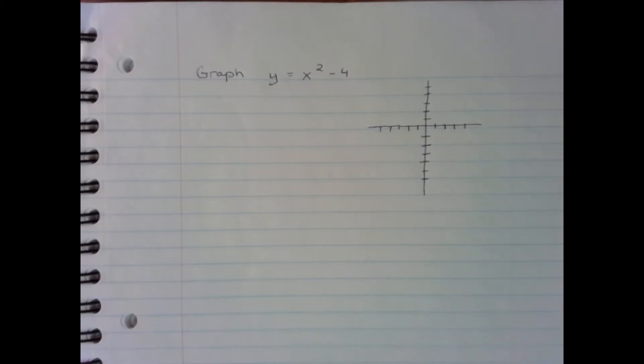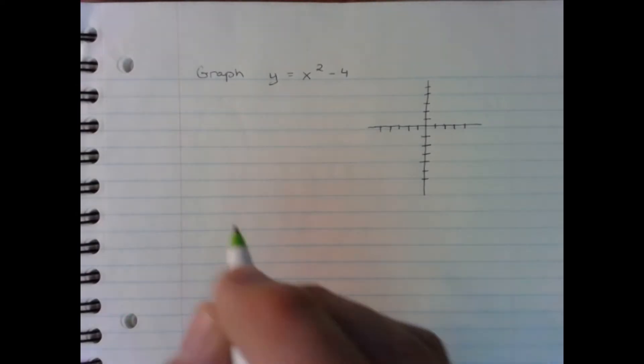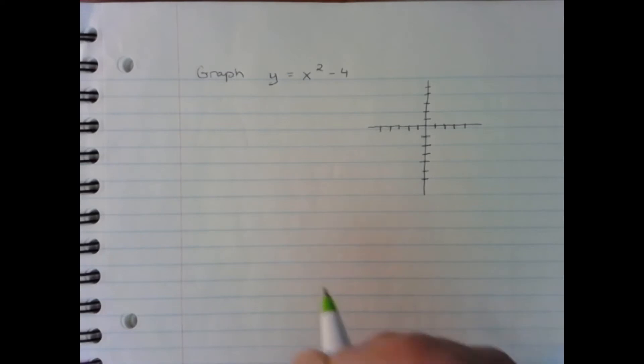Okay, here we're going to graph the quadratic y equals x squared minus 4. The first thing is we're going to identify the vertex.